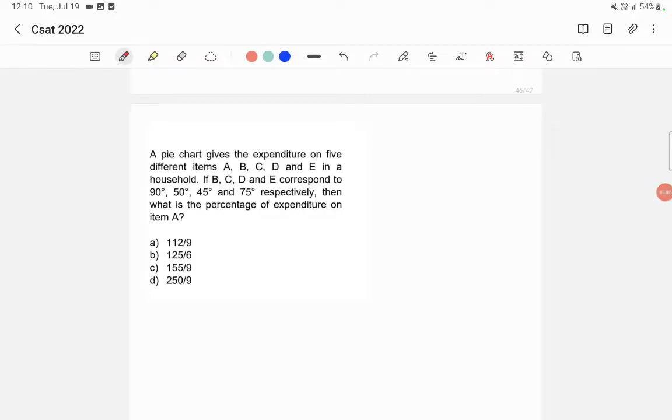A pie chart gives the expenditure on 5 different items A, B, C, D and E in a household. If B, C, D and E correspond to 90 degree, 50 degree, 45 degree and 75 degree respectively, then what is the percentage of expenditure on item A?